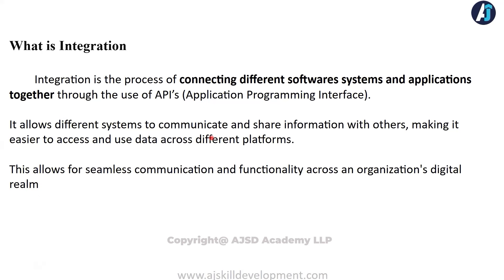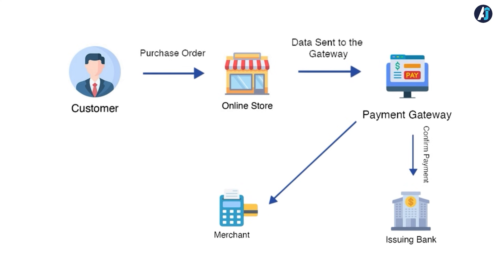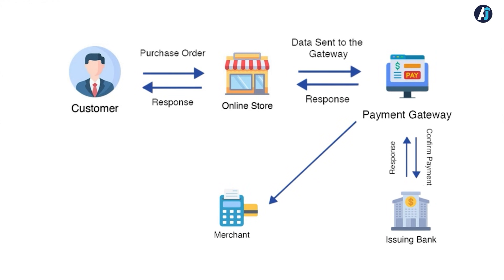So why do we need to communicate with each other? Sometimes, if you look at applications, the data might be spread across different stakeholders. For example, in the banking sector, if you are trying to purchase something on Amazon and doing checkout, you enter your debit card or credit card information for payment. That card information is definitely not going to be managed by Amazon — it is managed by your issuer bank.